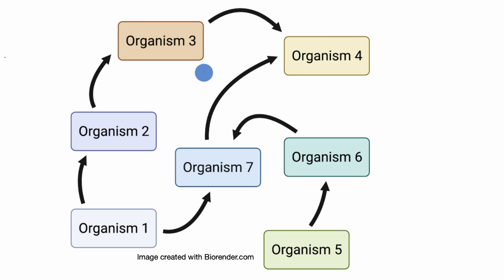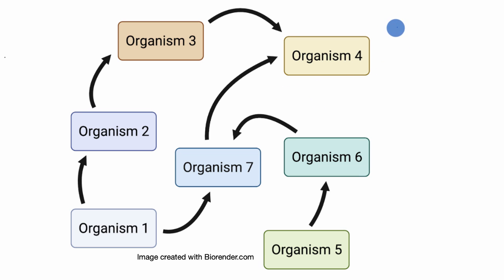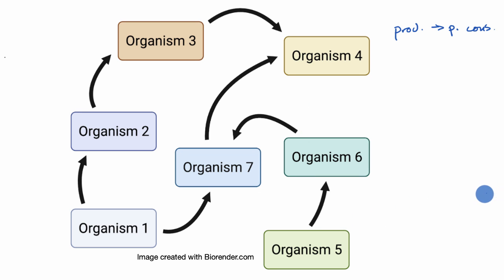But even this gives us some information about which organisms are the producers, the primary consumers, the secondary consumers, and the decomposers. So the first thing I want you to think about is which arrows show us going from producers to primary consumers? Pause the video and think about that.